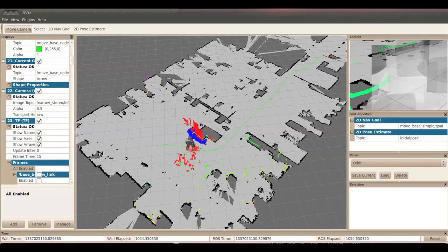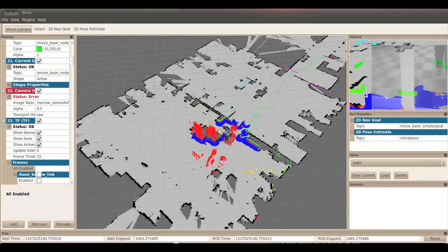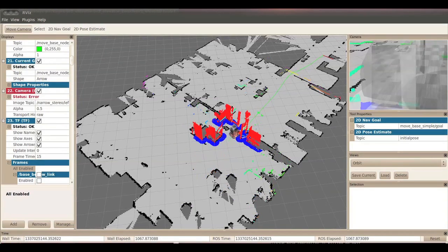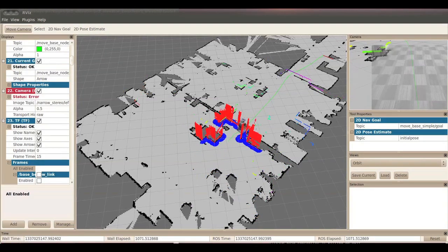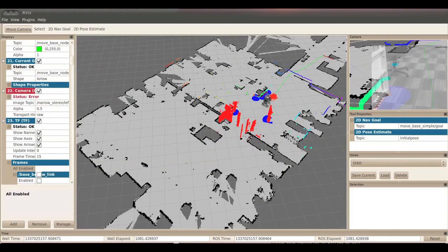We first created a map of the environment using the PR2 NAV SLAM package and annotated it with locations of the elevator and its corresponding control buttons. With the map, PR2 can then navigate from the lab to the elevator using the PR2 NAV package.